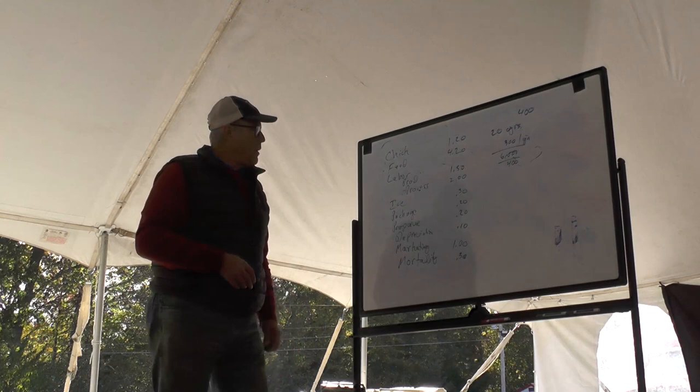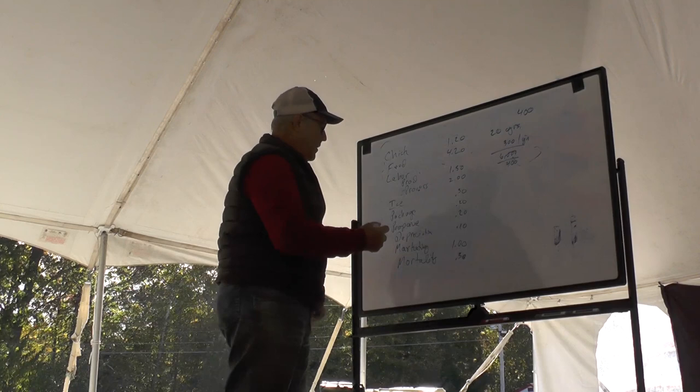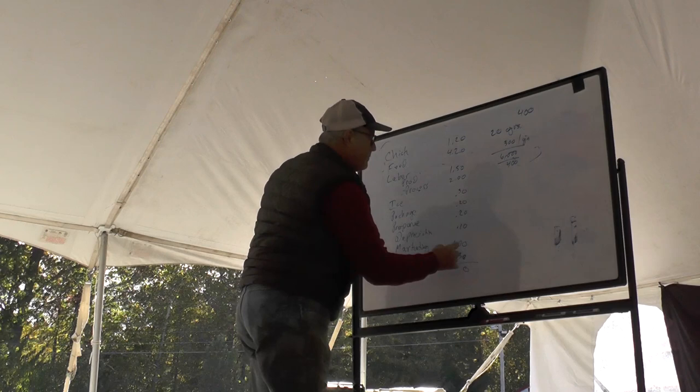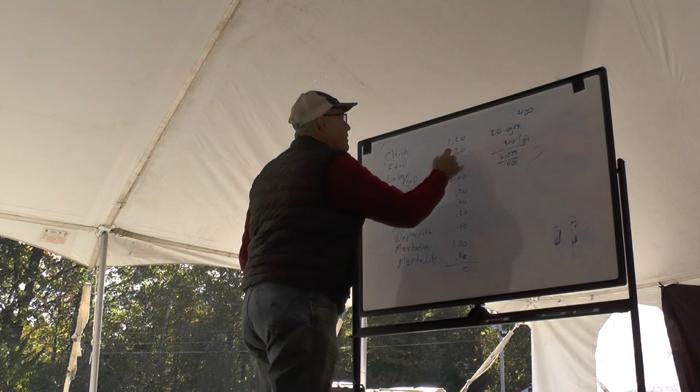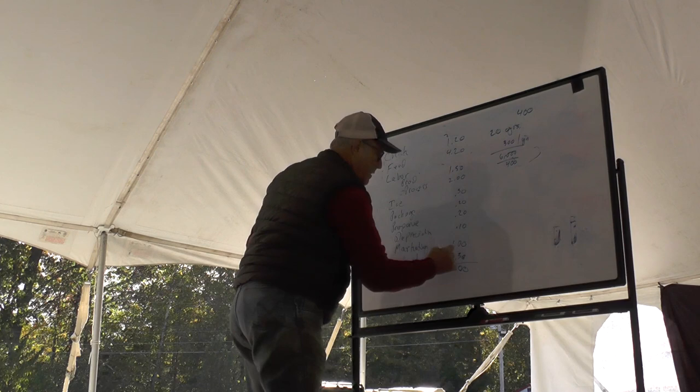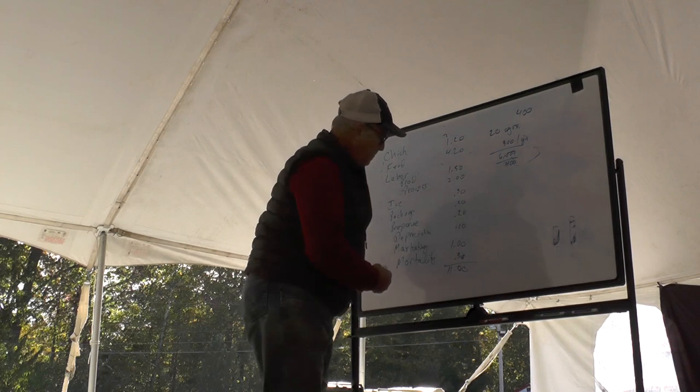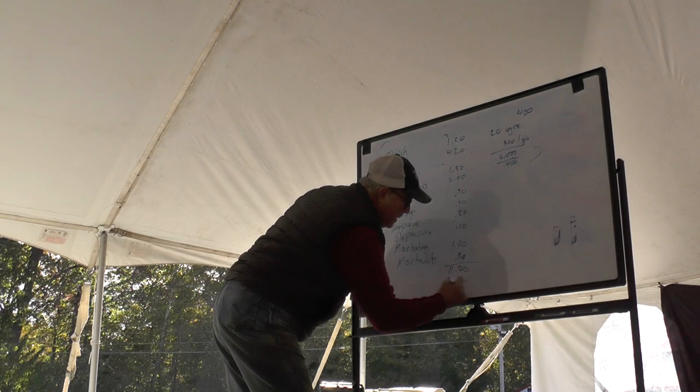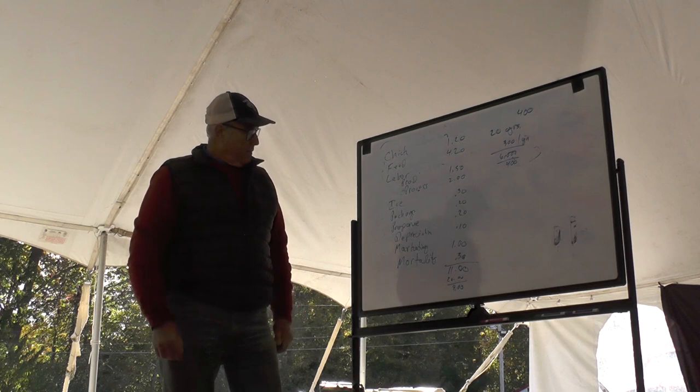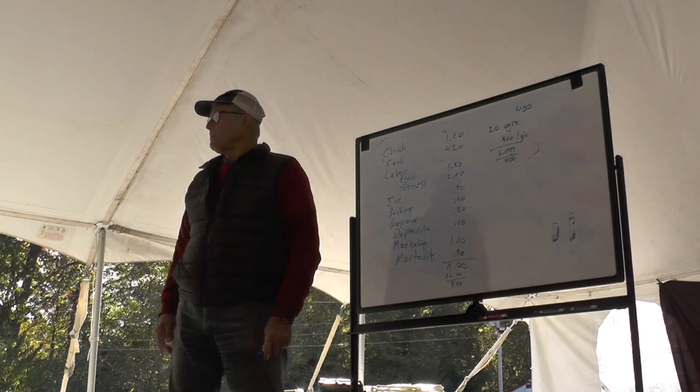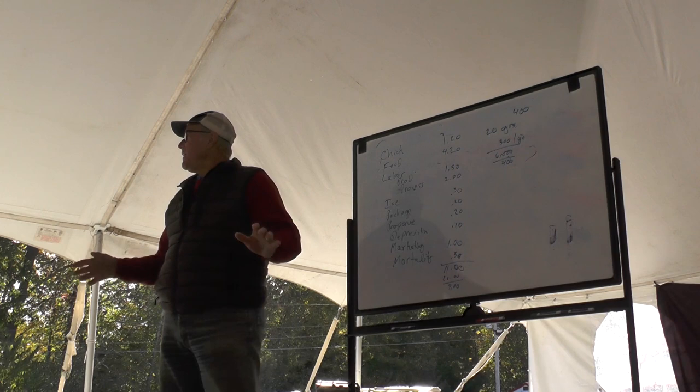Unless I'm forgetting something, I think I've got everything. Let's add all this up. Eleven dollars for a bird of expense and we're selling them for 20. That leaves us a margin of nine dollars a bird, which is about 40-45 percent. If our goal is 30-35 percent, that gives a little bit of wiggle room.